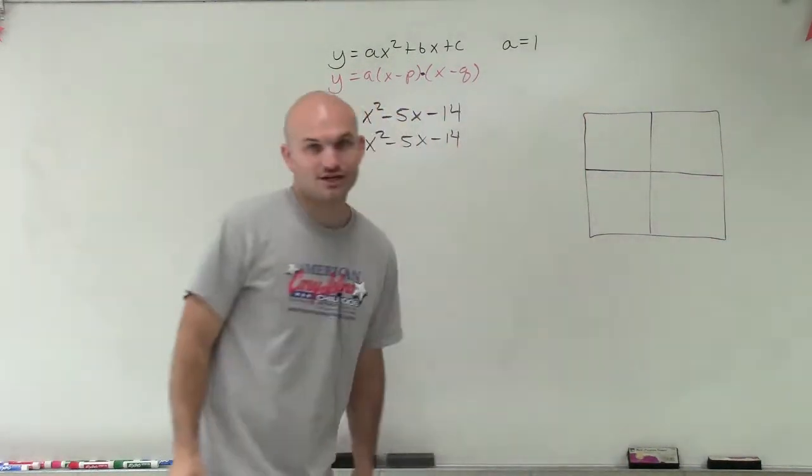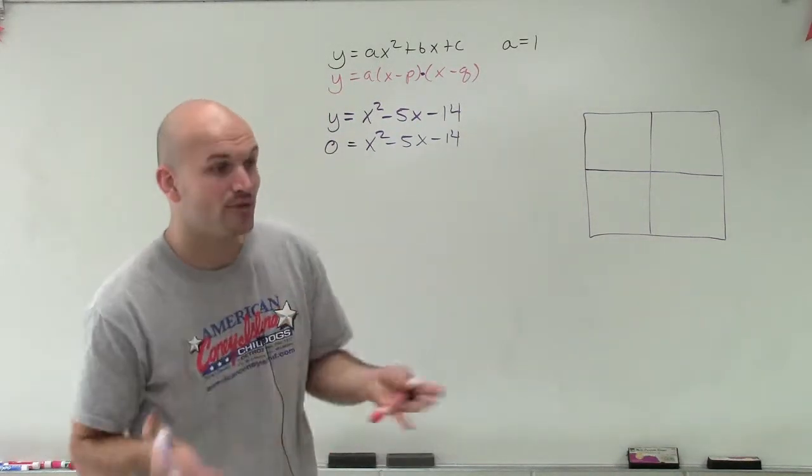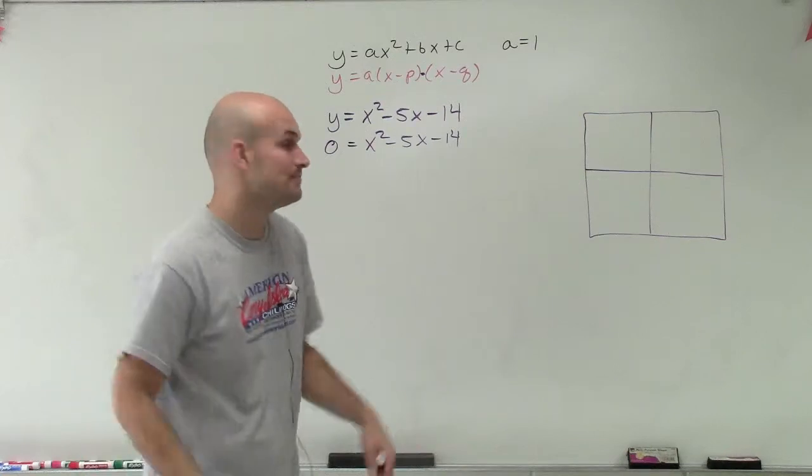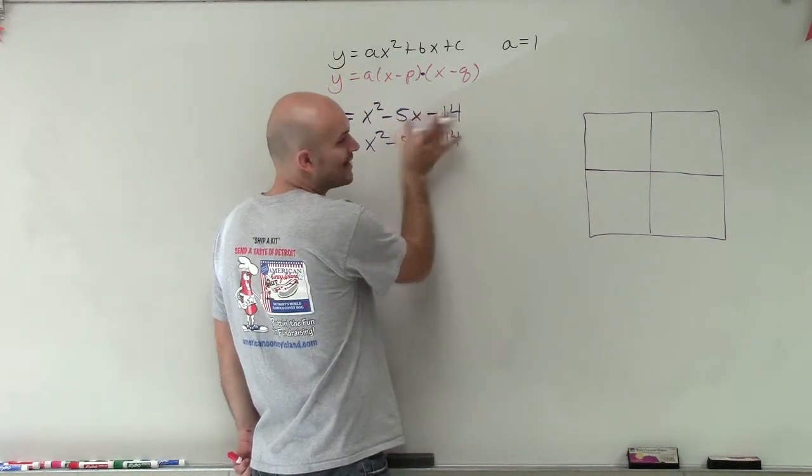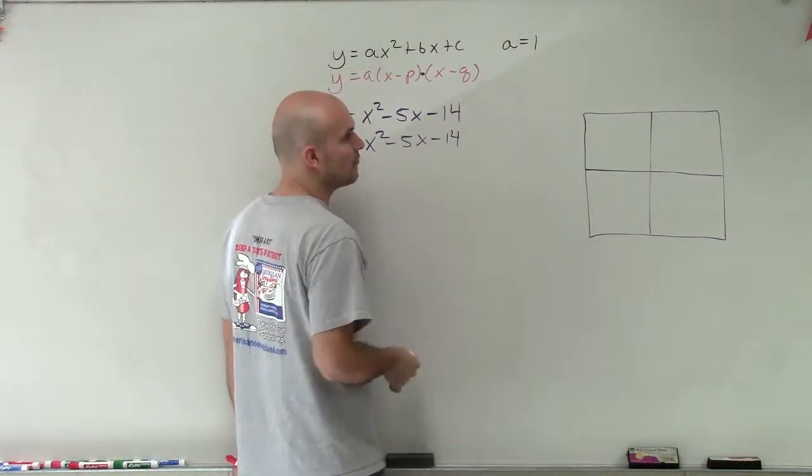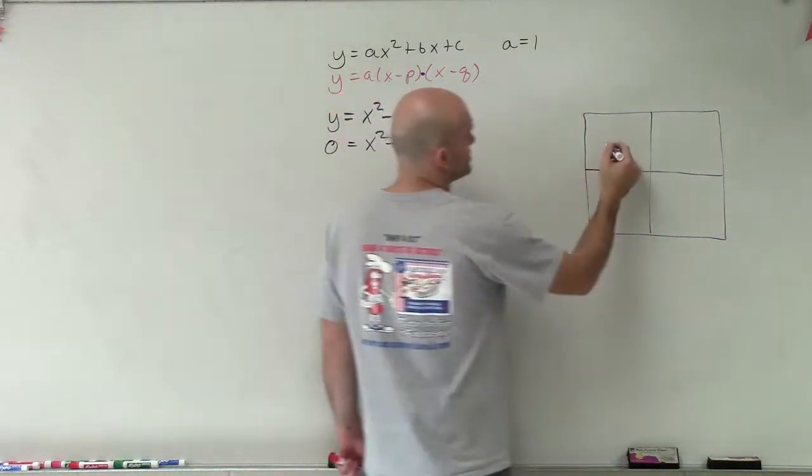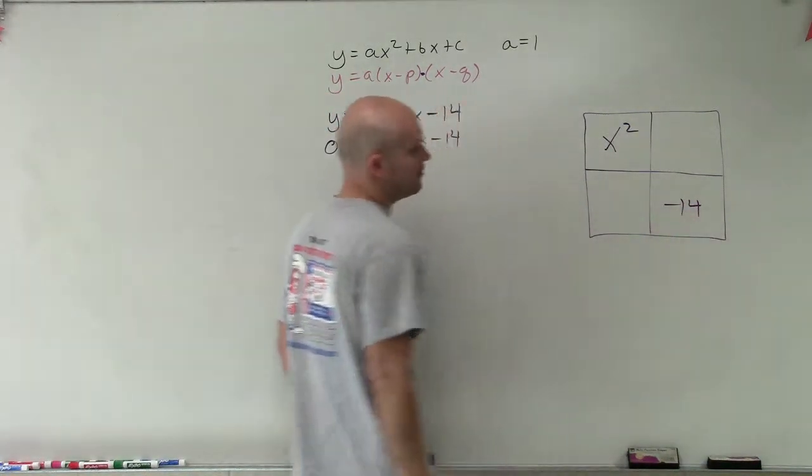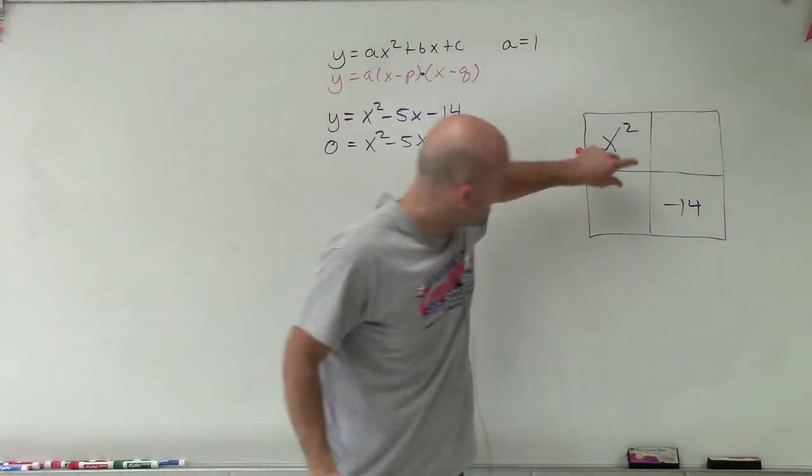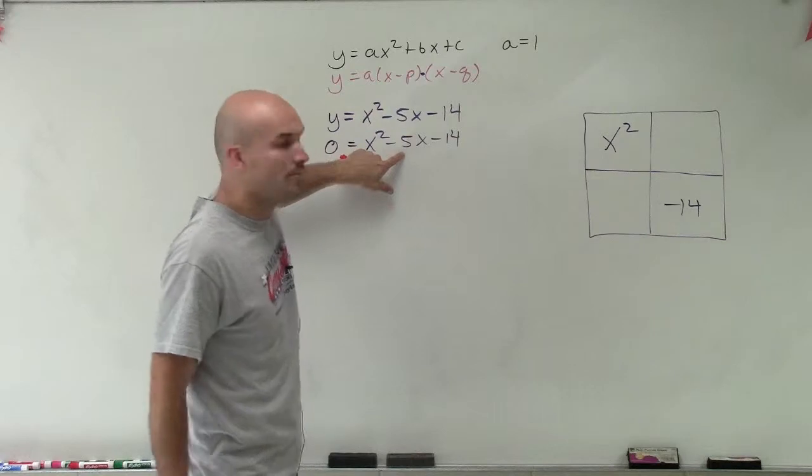Because the multiplication of two numbers or two factors is going to produce a product, right? And a product we can represent by an area. So if I want to represent this as the area of a rectangle, and I'm breaking up into four sections, because what we're going to have is four separate terms, which we call our factors. So the first one, we have an x squared, and then we have a negative 14. And what our goal is now is to decide what numbers are going to go into this box to give us our middle term.